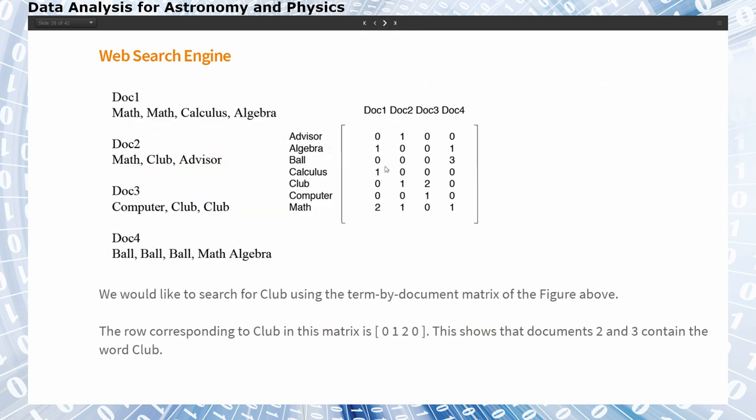On the right-hand side we see such a matrix. We have four documents and every document has been searched for a certain number of words: advisor, algebra, ball, calculus, club, computer, and math. The numbers tell us that the word algebra occurs once in document one, zero times in documents two and three, and once in document four, while ball only occurs three times in document four and doesn't occur in the other documents, and so on.